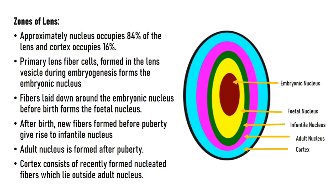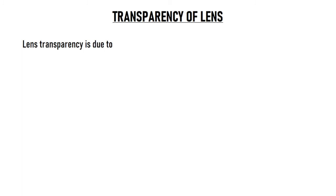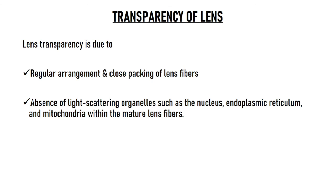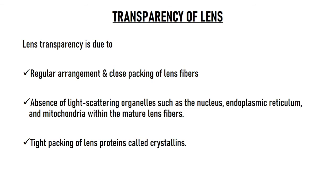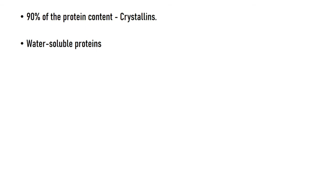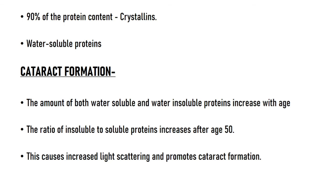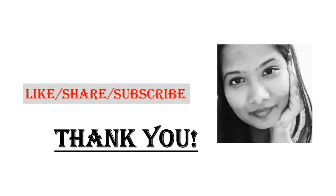Three factors contribute to lens transparency. First is the regular arrangement and close packing of lens fibers, which destroys scattered light by destructive interference. Second is the absence of light-scattering organelles such as nuclei, endoplasmic reticulum, and mitochondria in mature lens fibers. Third is the tight packing of lens proteins called crystallins, which make up 90% of all lens protein content and are water-soluble. The remaining 10% are water-insoluble proteins. With age, both water-soluble and water-insoluble proteins increase, and after age 50 the ratio of water-insoluble to water-soluble proteins rises, causing light scattering and cataract formation — a topic that will be covered in separate videos. Thank you very much for your time.